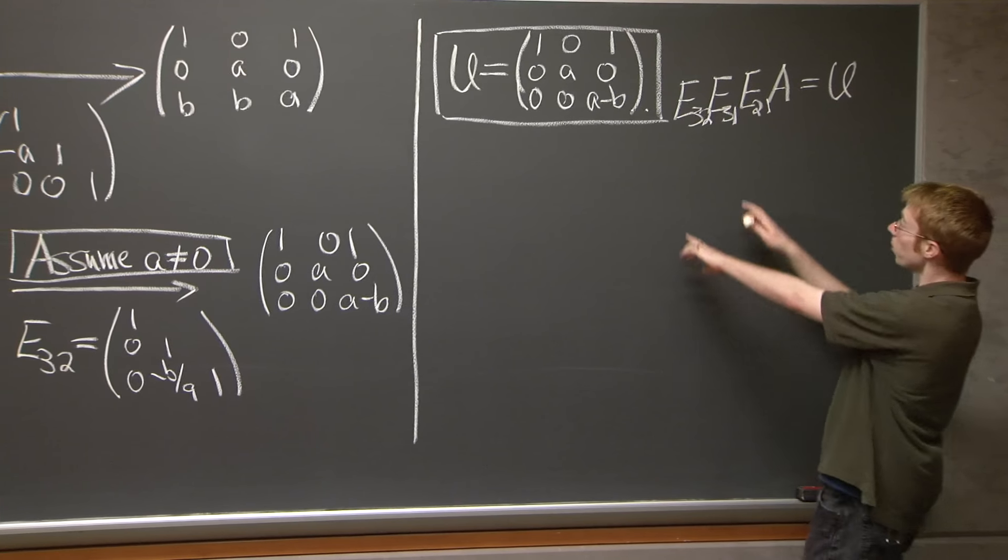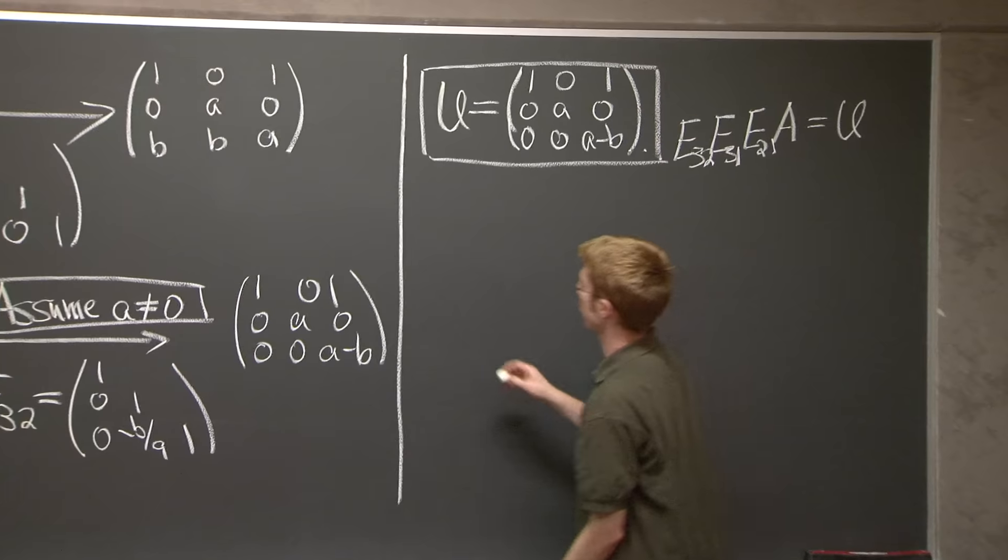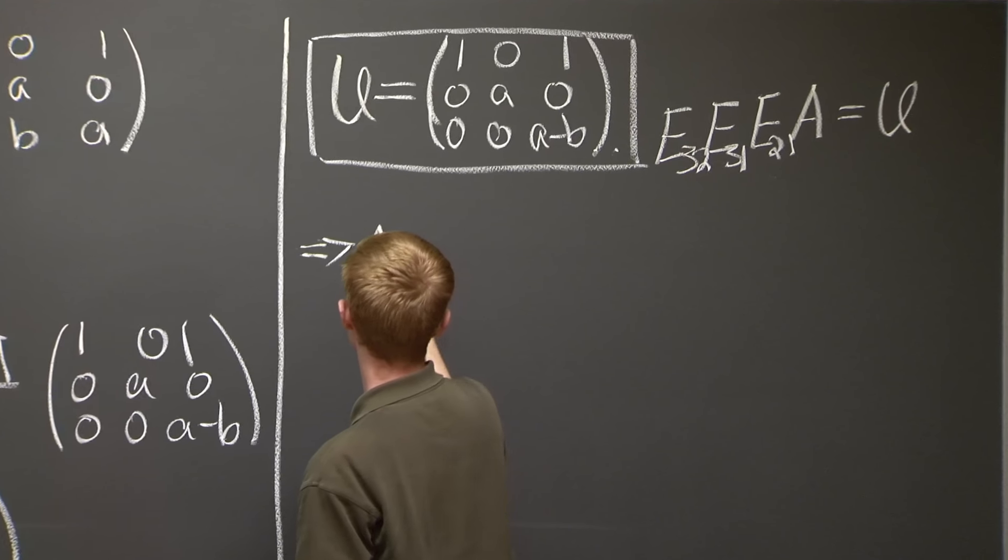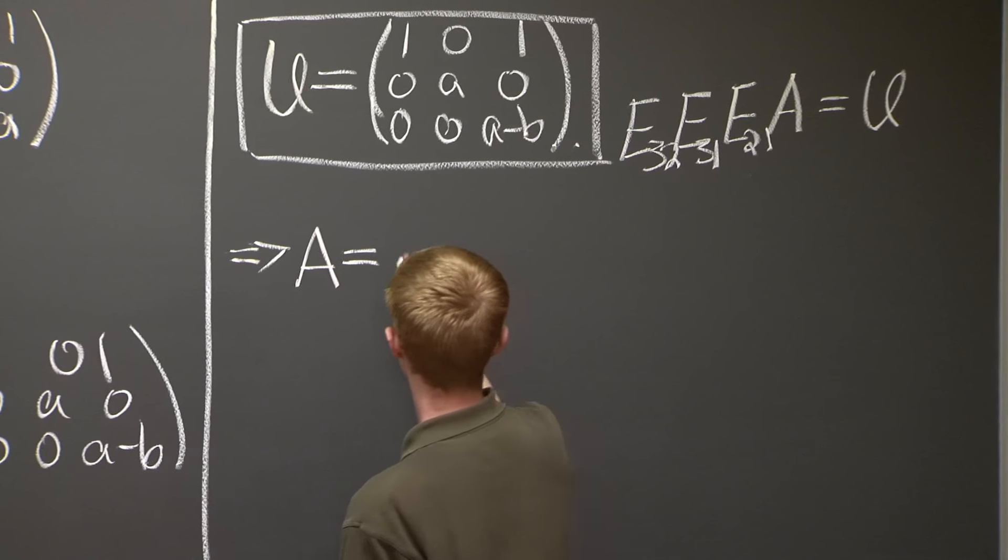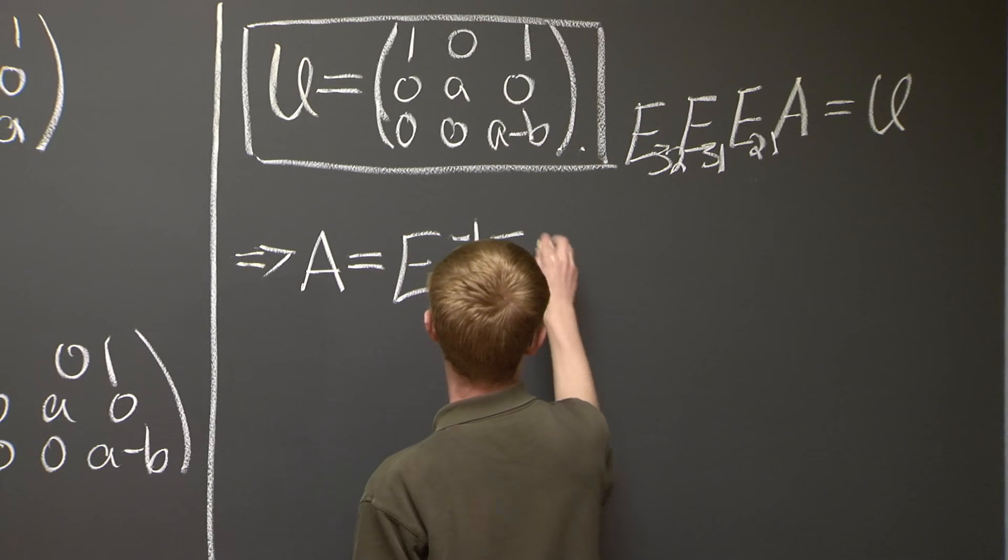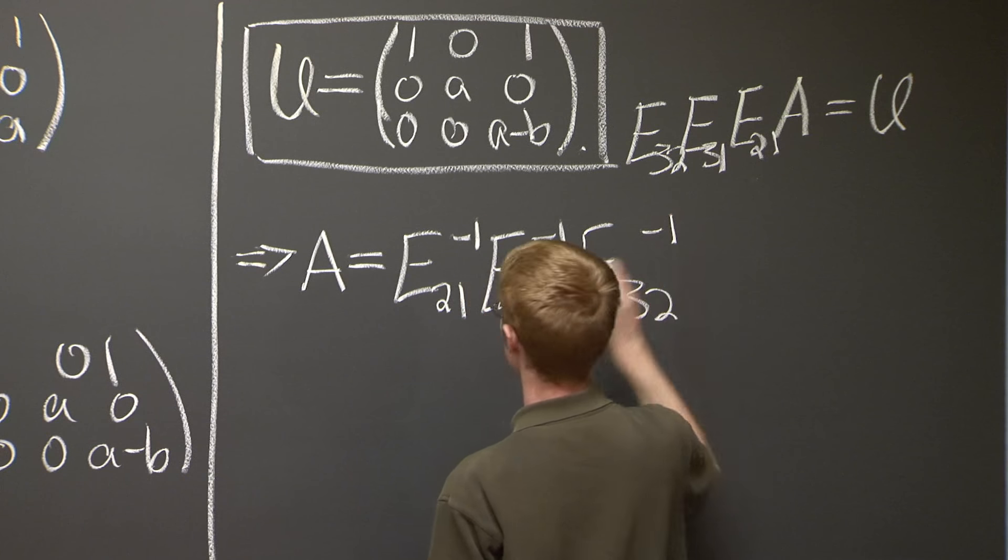Now, if we move these elimination matrices to the other side, then we'll get L. So what do we have? We have A equals E_{2,1} inverse, E_{3,1} inverse, E_{3,2} inverse,